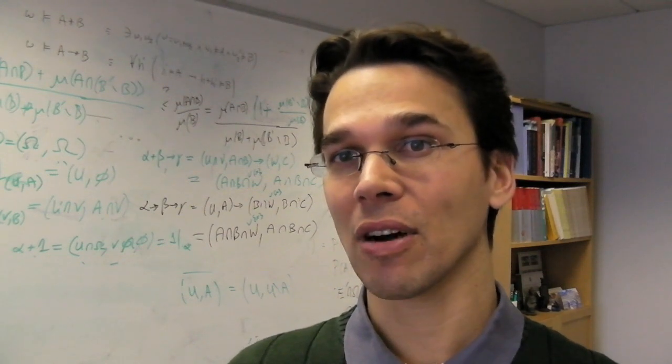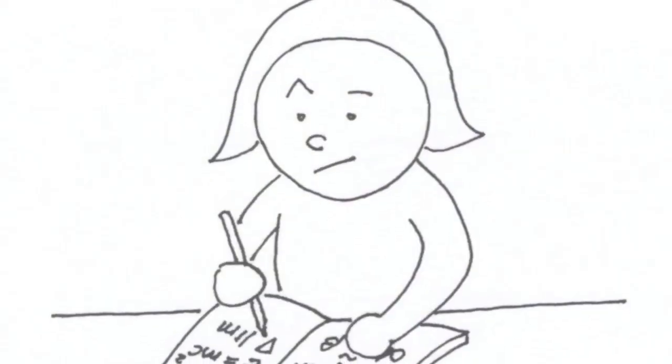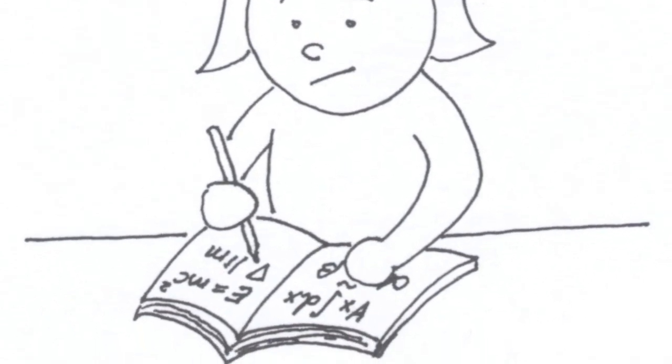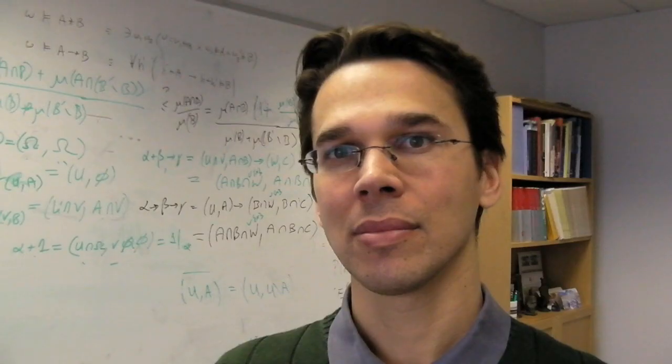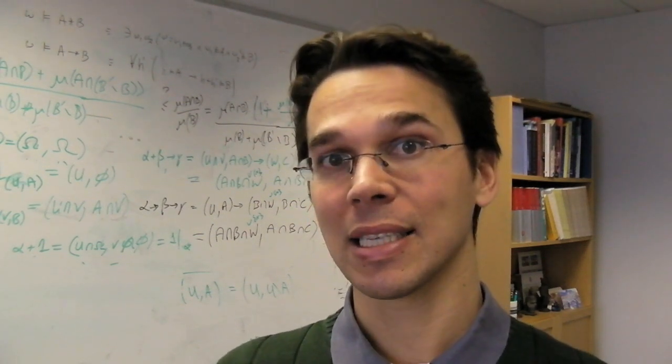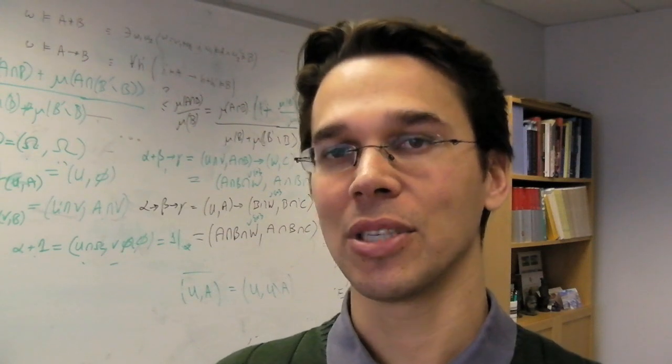The first is that Turing didn't think of calculations as in mathematics. He looked at how humans calculate. And how do people calculate? They get a pen, a piece of paper, and they write symbols on it. And that's exactly what Turing thought calculating machines should do.